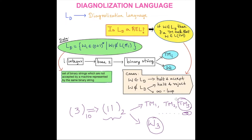We are going to focus on whether the diagonalization language is a recursively enumerable language — that means if w belongs to L_D, then there exists a Turing machine such that w belongs to the language generated by that Turing machine. There are two cases: the string can belong to L_D, or it will not. If the string belongs to L_D, the Turing machine halts and accepts. If the string does not belong, there are two possibilities: the Turing machine halts and rejects, or it goes into an infinite loop.